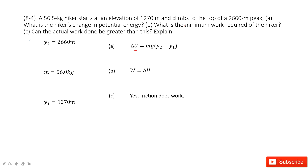The second part: calculate the minimum work required for the hiker. Because the hiker moves from y1 to y2, it must do work to satisfy this change in potential energy — this is the conservation of energy. So the minimum work required for the hiker is just equal to the change of potential energy.